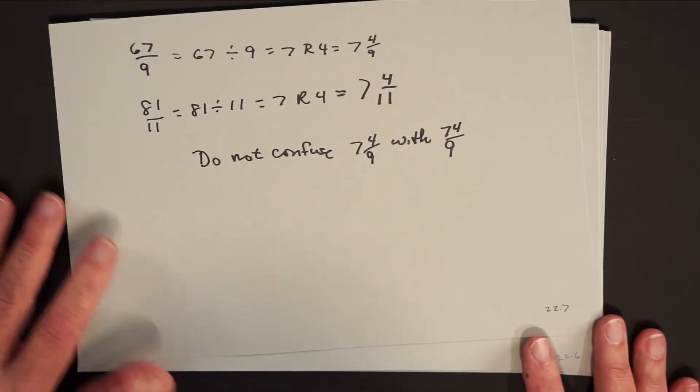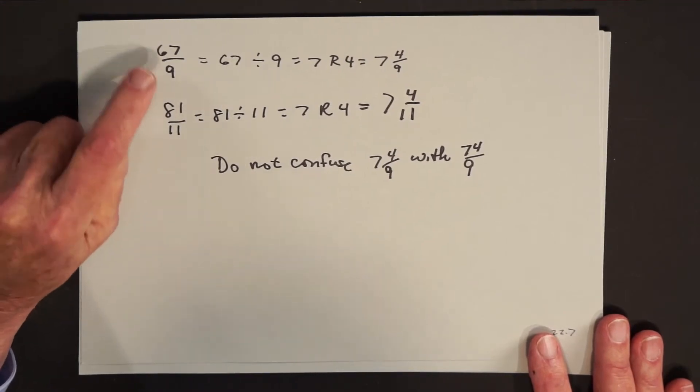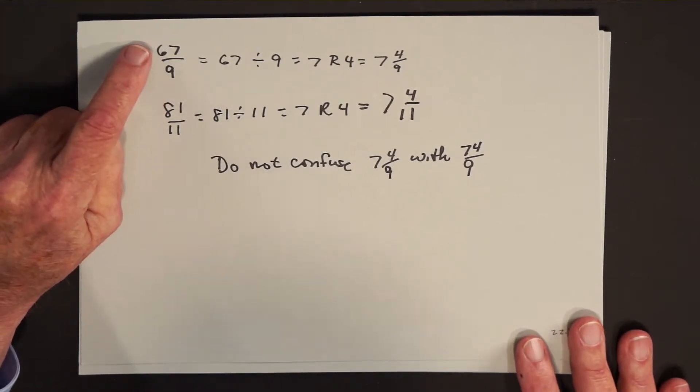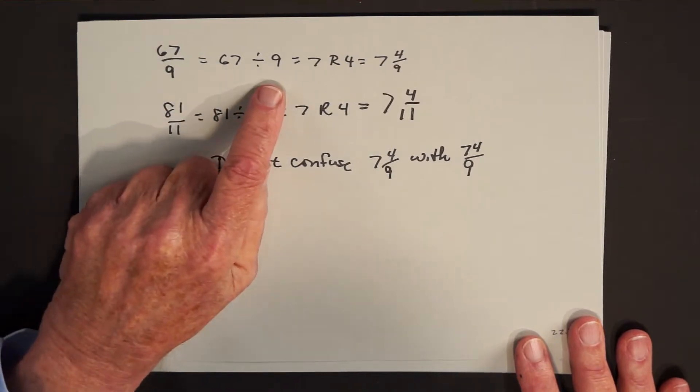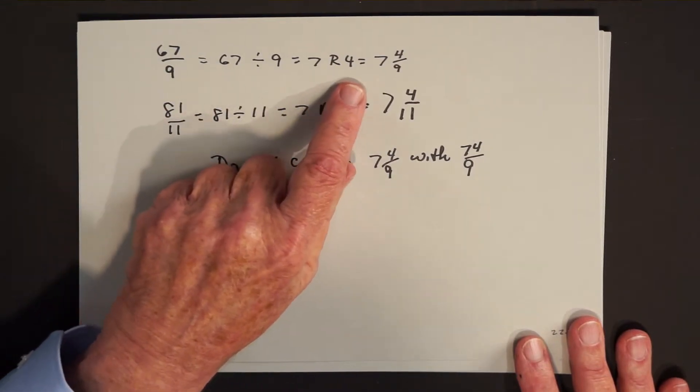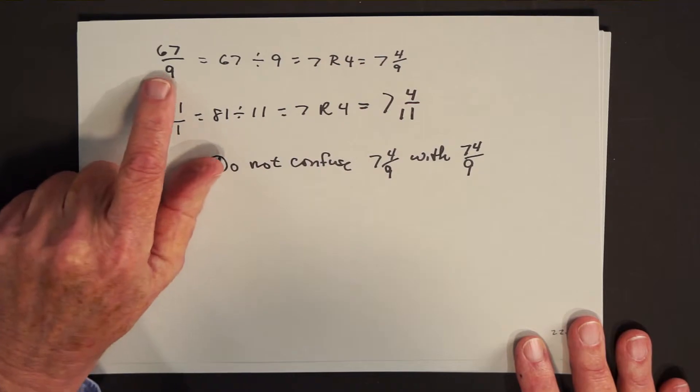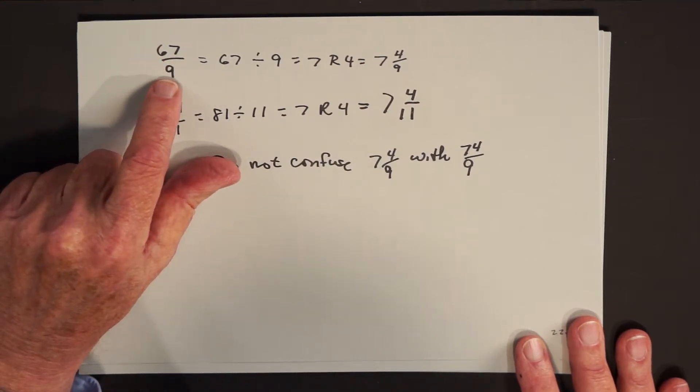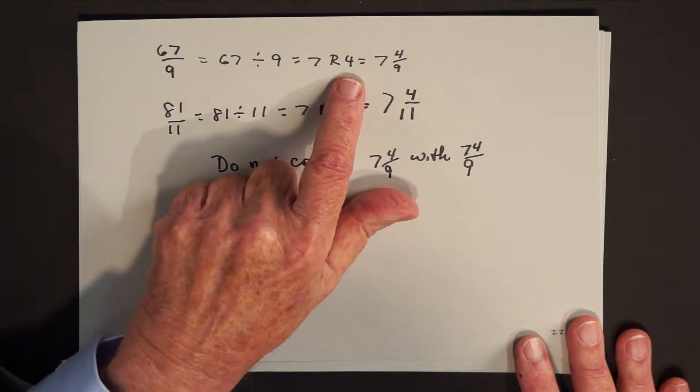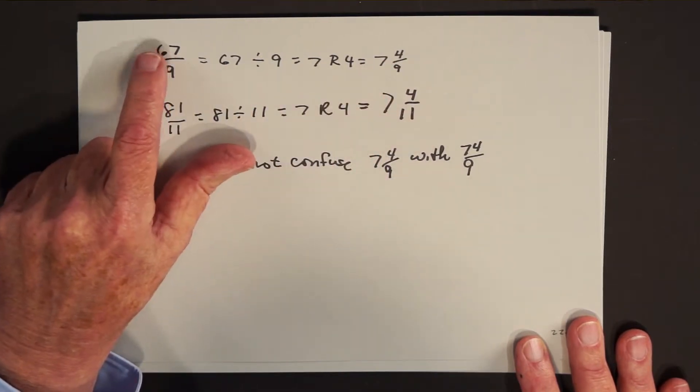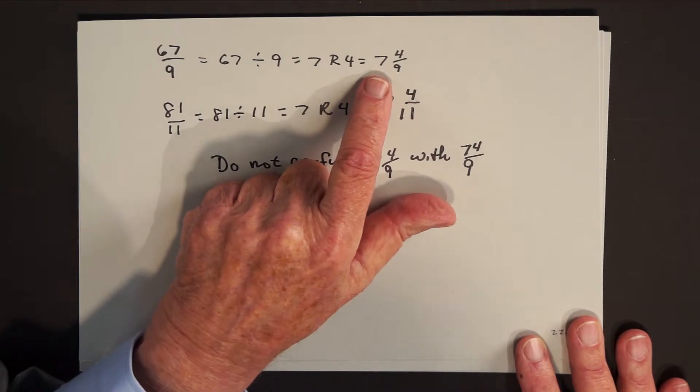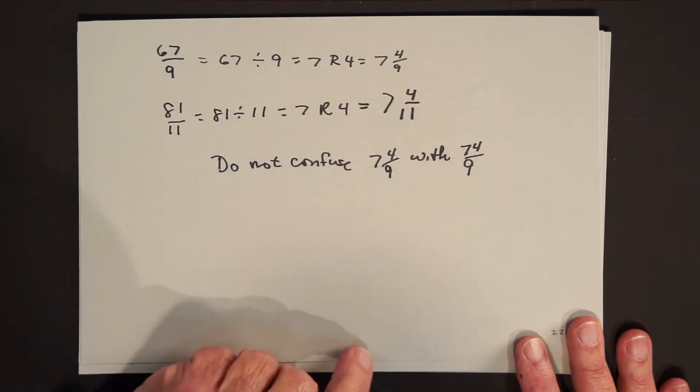So for example, if I see the improper fraction 67 over 9, that tells me to divide 67 by 9. If I do that, I get 7 with a remainder of 4. And since the denomination here is 9, the remainder of 4 means 4 ninths. So in other words, 67 divided by 9 written as a mixed number is 7 and 4 ninths.